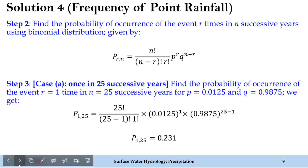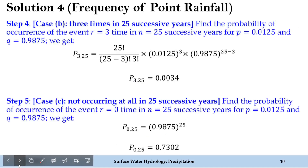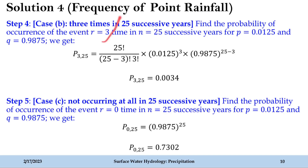In a similar fashion, let's solve the remaining parts. In step 4, we solve case B: the probability of the event occurring three times in 25 successive years. Here r = 3, n = 25, and p and q values are the same as before. Substituting these values into the binomial distribution equation, we obtain the probability as 0.0034.